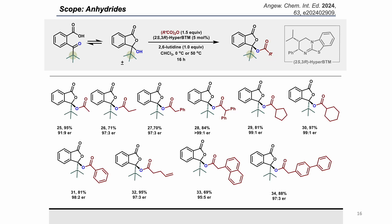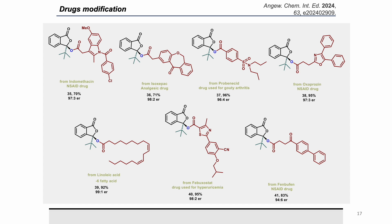We then explored variations in the anhydride component to generate a general method for preparing a range of phthalide esters. Simple anhydrides such as acetic anhydride, propionic anhydride, phenylacetic anhydride, and branched ones like cyclopentane- and cyclohexane-based anhydrides were well tolerated. Even very bulky diphenylacetic anhydride gave great yield and enantioselectivity, as did naphthyl- and biphenyl-based anhydrides. We then challenged our DKR method by incorporating medicinally relevant carboxylic acid motifs, subjecting anhydrides of commercially available drugs and natural products to our DKR process, all giving high-yielding enantio-enriched products.